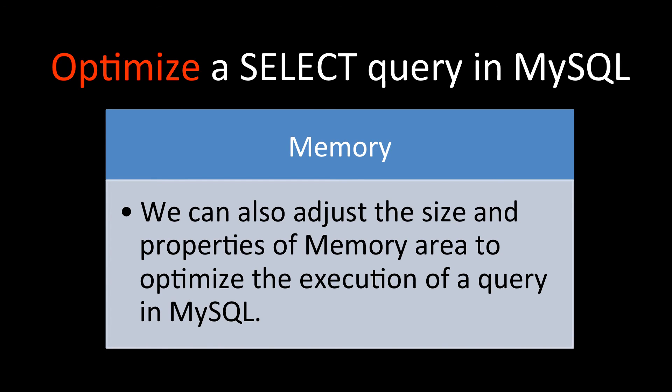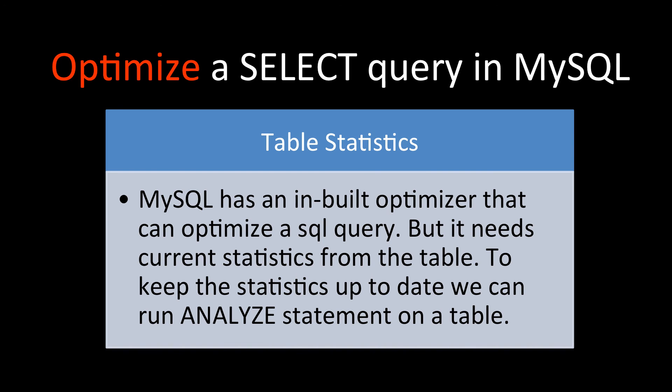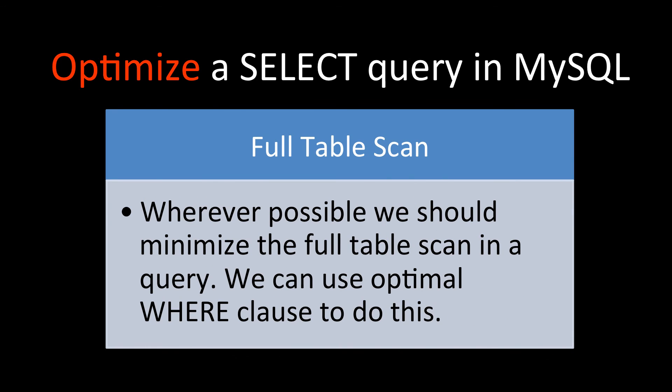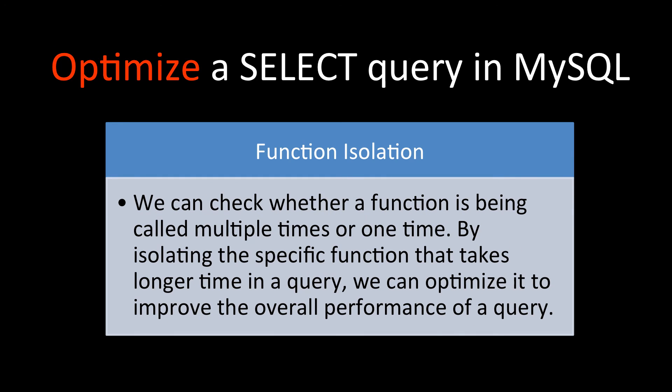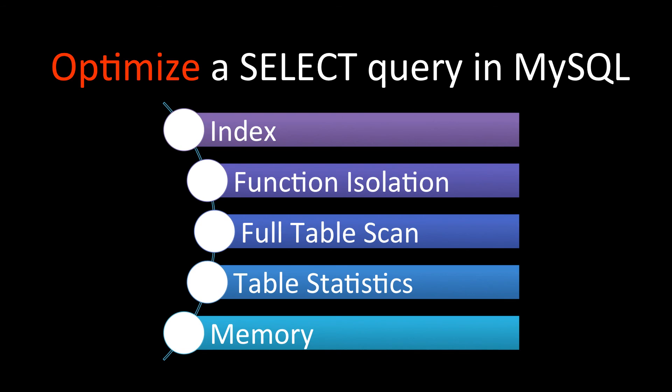For memory, sometimes we can also adjust the size and properties of the memory area so that the query gets more memory to run, and that way it can execute much faster. So to reiterate, the options to optimize a SELECT query in MySQL are: memory, table statistics, full table scan, function isolation, and index.